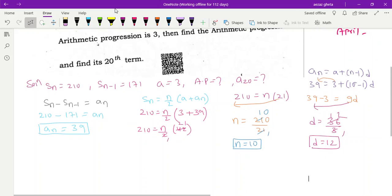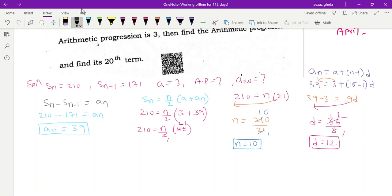Now whatever they say we can find out. Think, they said a20, then I can add a plus 19d. a value we got it, they gave 3, 19 into 4, am I right? For 19 into 4 multiply and then you add with 3, you will get the answer. Okay, 76, right?